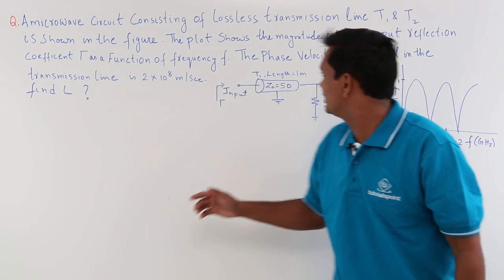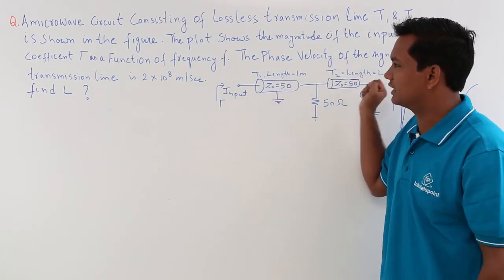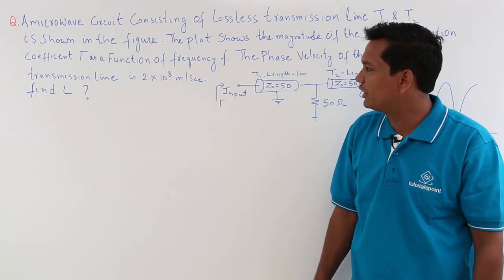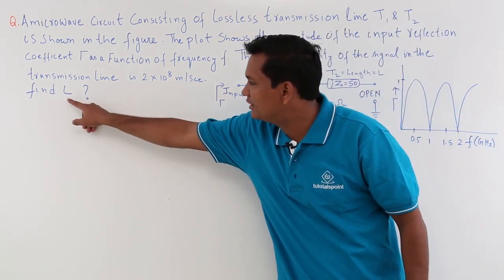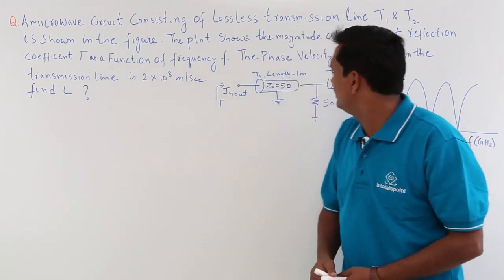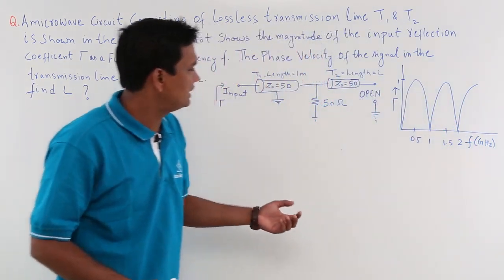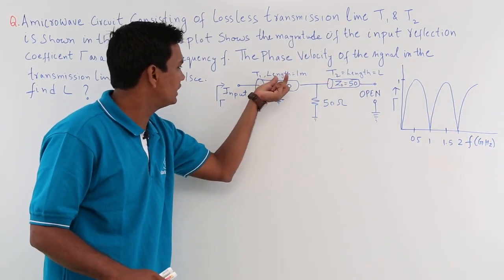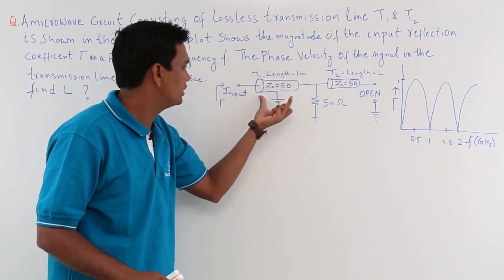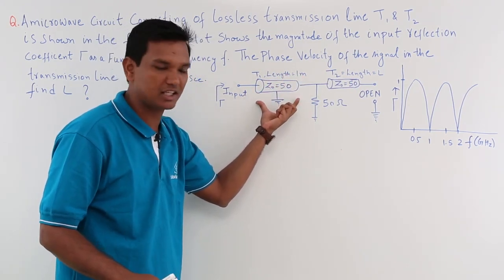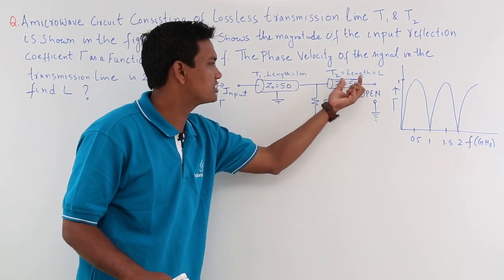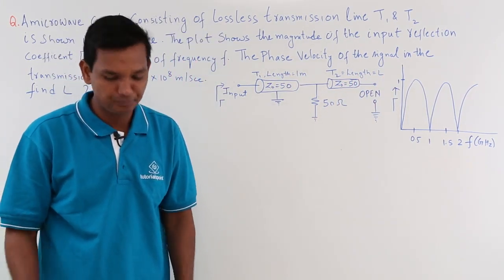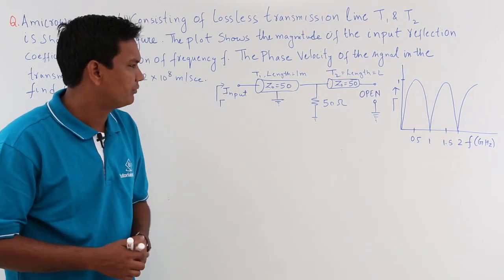The phase velocity of the signal is given as 2 × 10⁸ meters per second. We have to find L, which is the length of the second part of the transmission line. T1 has a length of 1 meter, and T2 has length L, which we need to find.